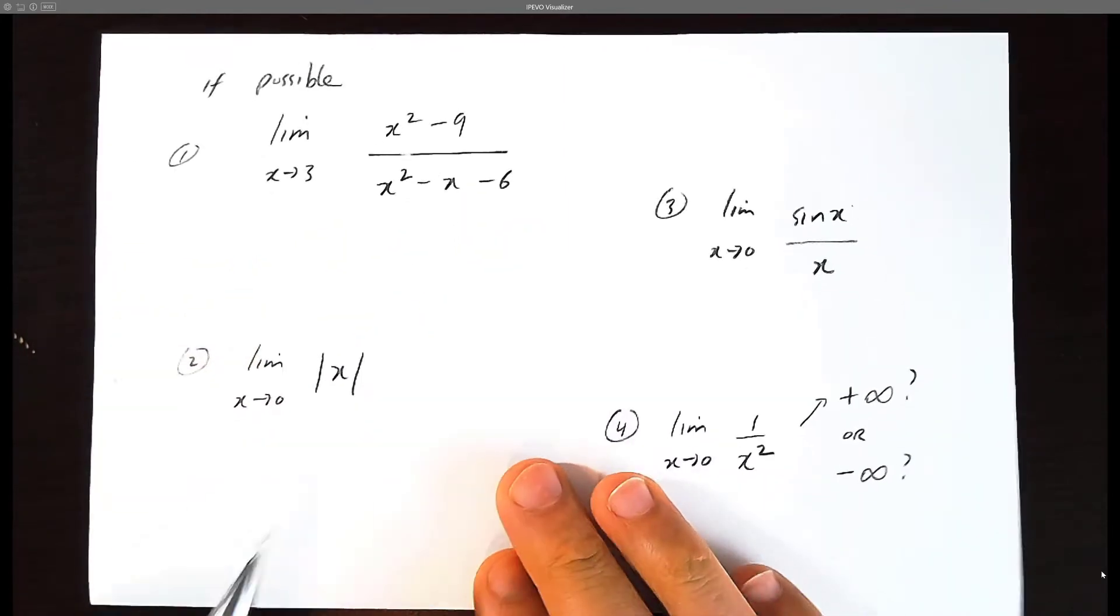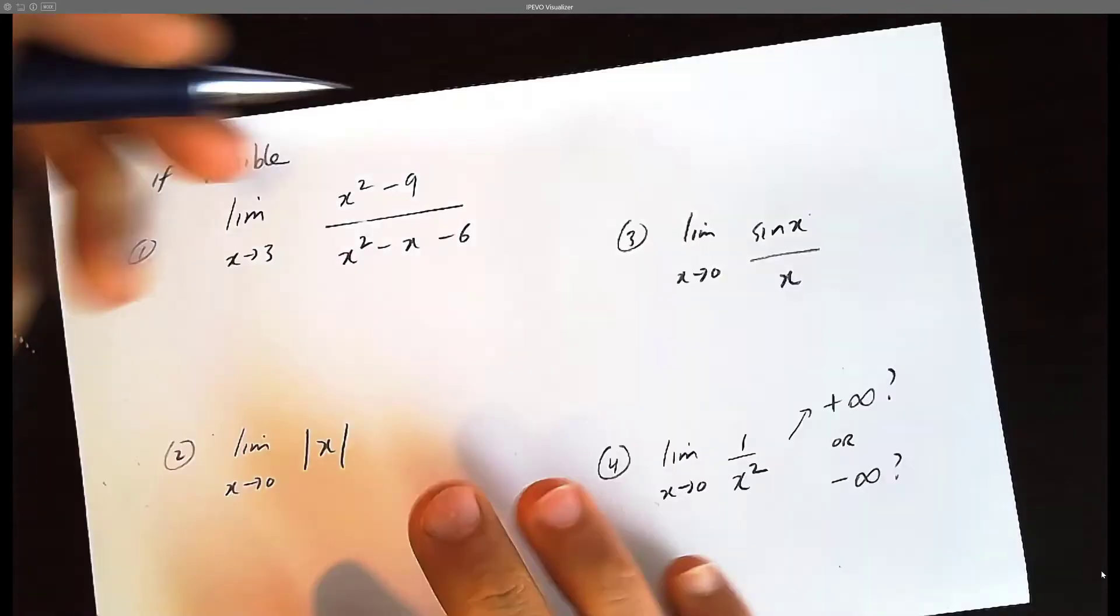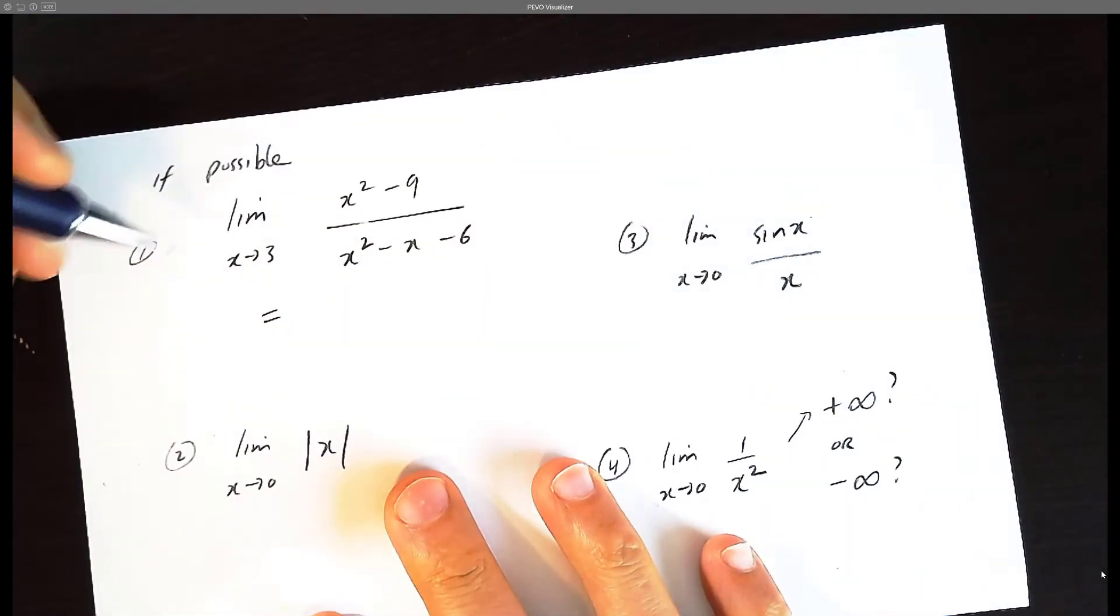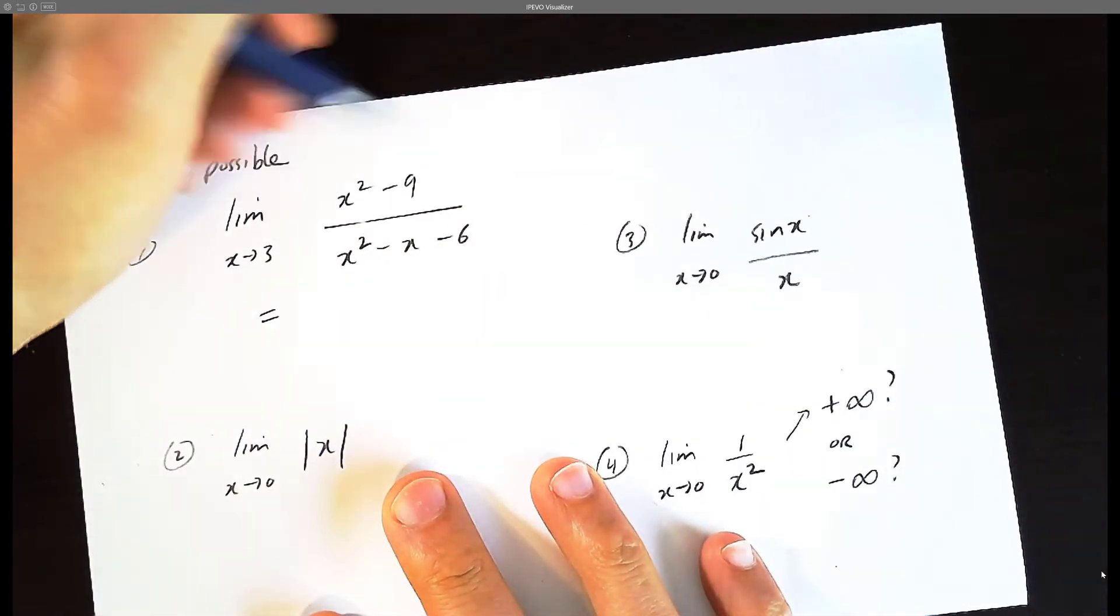So we can't divide by 0 in math. So before you write no limit, try some techniques that you understand. So tickle tickle, we can factor.